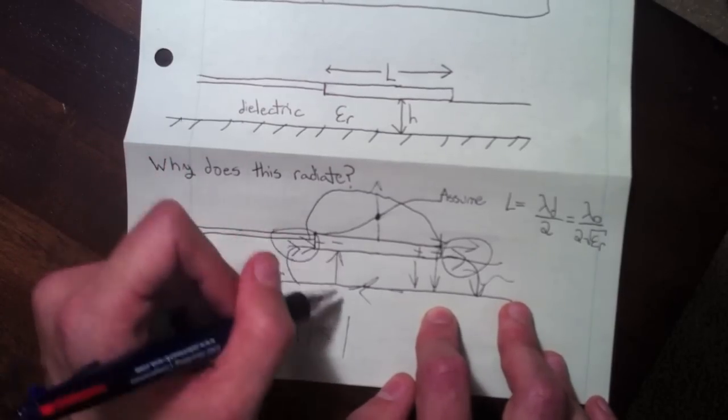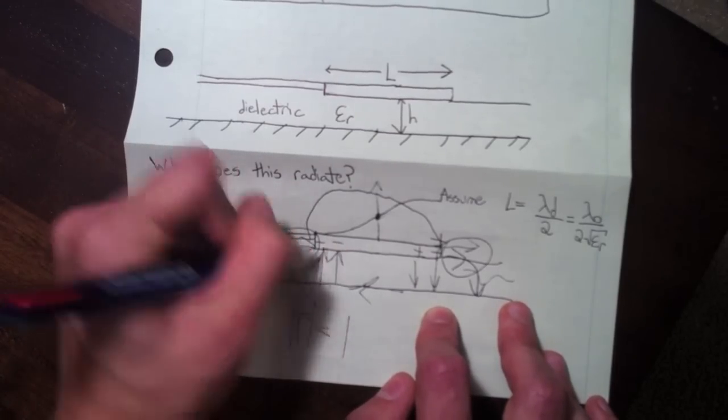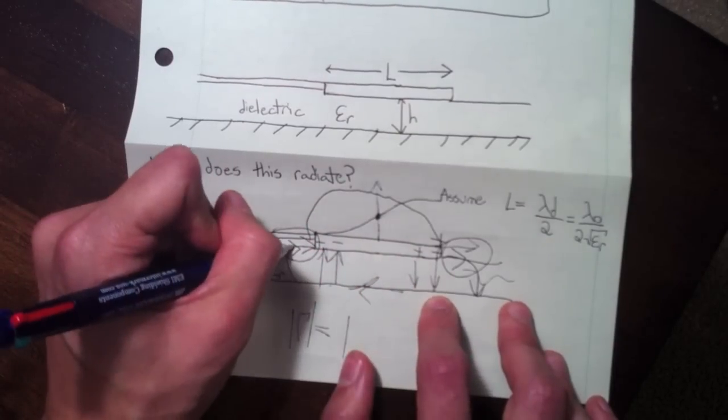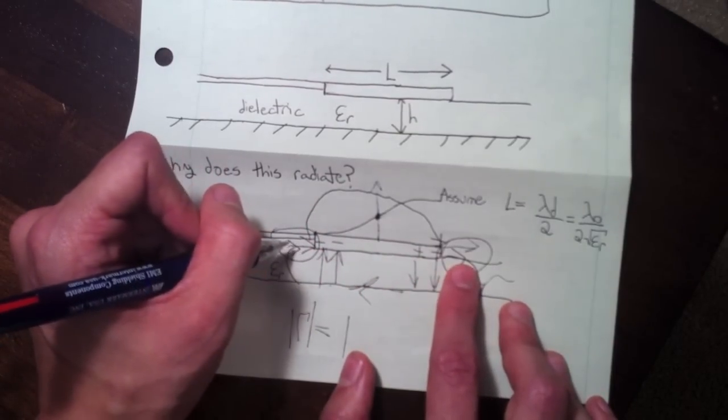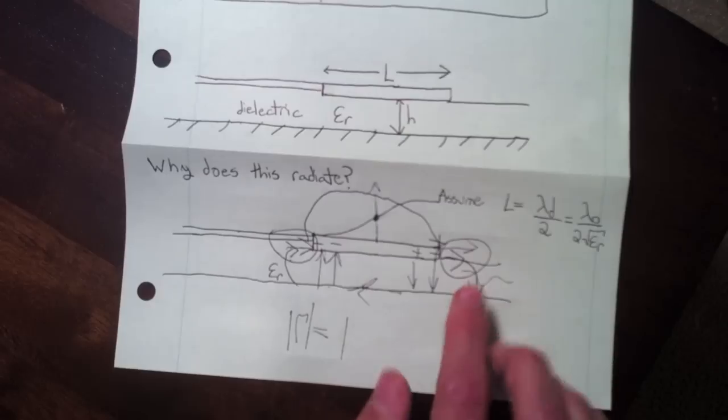And these dominant voltage fields below cannot be either. One, they're shielded by the patch, and two, for each one that goes up, there's one on the other side that goes down. But these fringing fields in the horizontal direction do not cancel, and these are the ones that are giving rise to radiation.